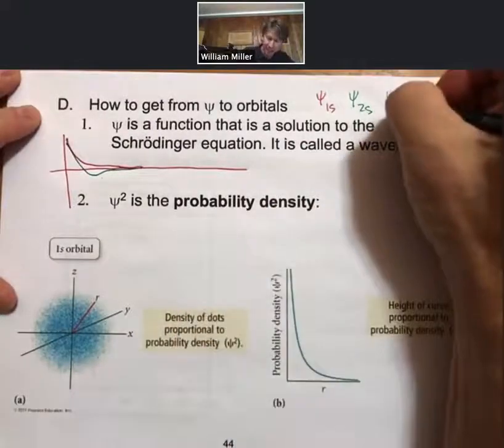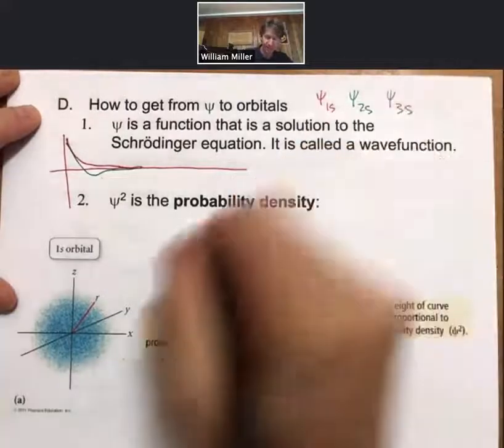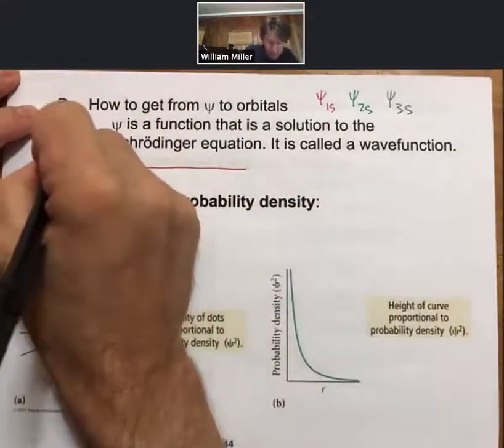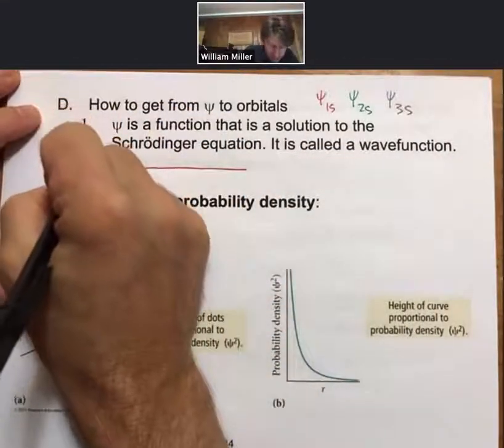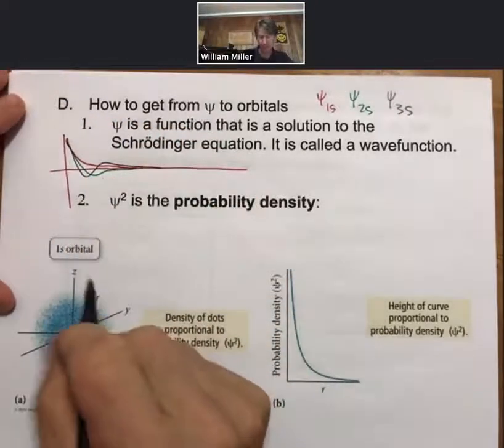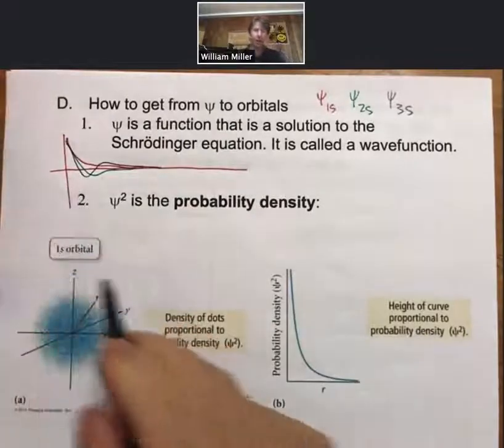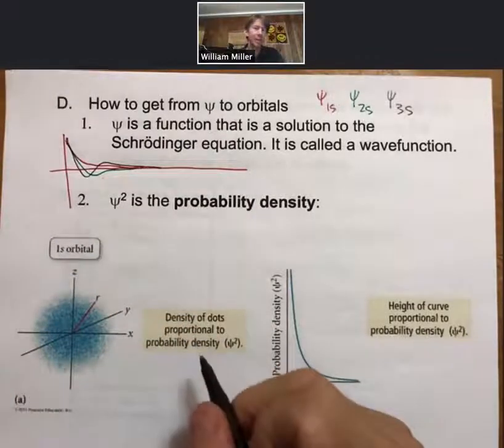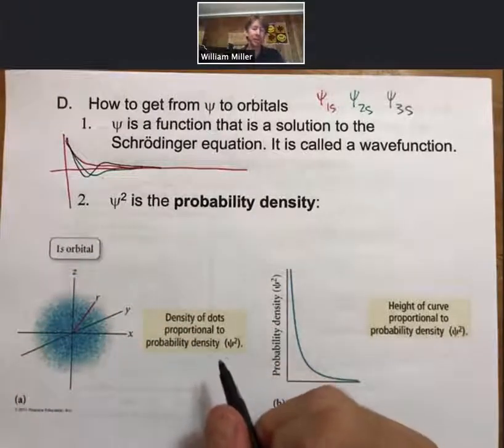And then for psi for 3s, we would actually start up here. We would actually go down, come back up, and then approach from the other side. And those are just one attempt to show you that these are wave functions. They are waves.